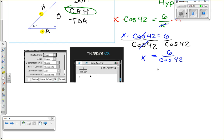Type in 6 divided by cosine of 42. What do you know? It's right there - it's going to be 8.073, yada yada yada.